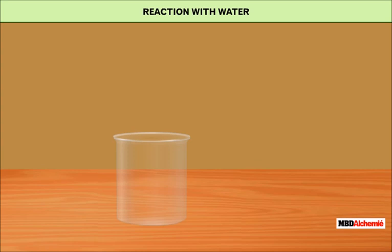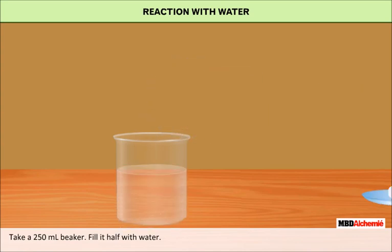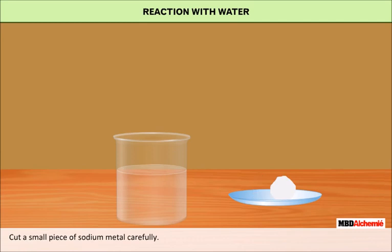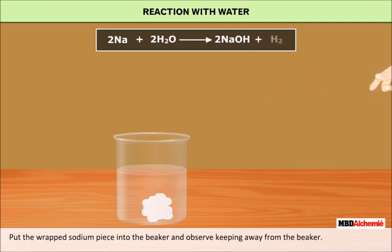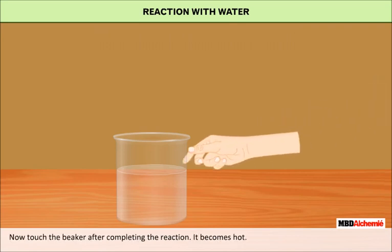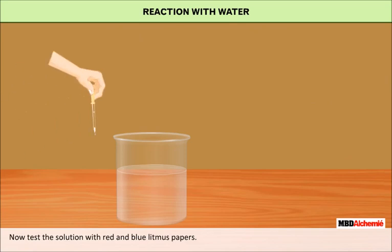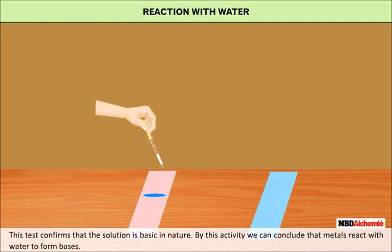Let us do an activity to demonstrate the reactivity of metals with water. Take a 250 ml beaker filled halfway with water. Cut a small piece of sodium metal carefully, dry it using filter paper and wrap it in a small piece of cotton. Put the wrapped sodium piece into the beaker and observe from a distance. You will observe that sodium reacts vigorously with water, and the beaker becomes hot after the reaction. Test the solution with red and blue litmus papers — the red litmus paper turns blue while the blue litmus paper does not change. This confirms the solution is basic in nature, and we conclude that metals react with water to form bases.